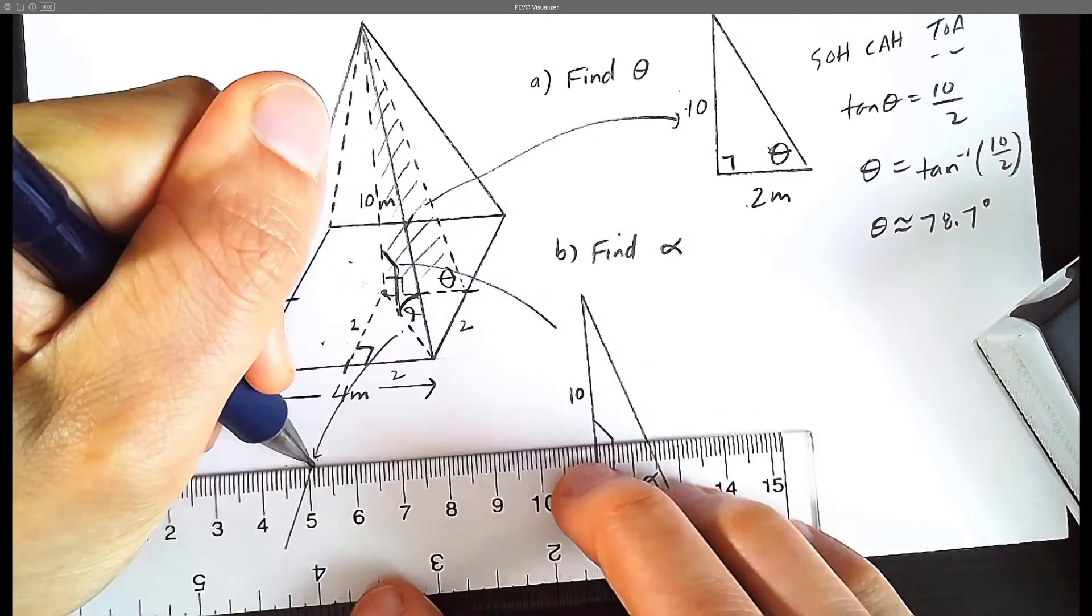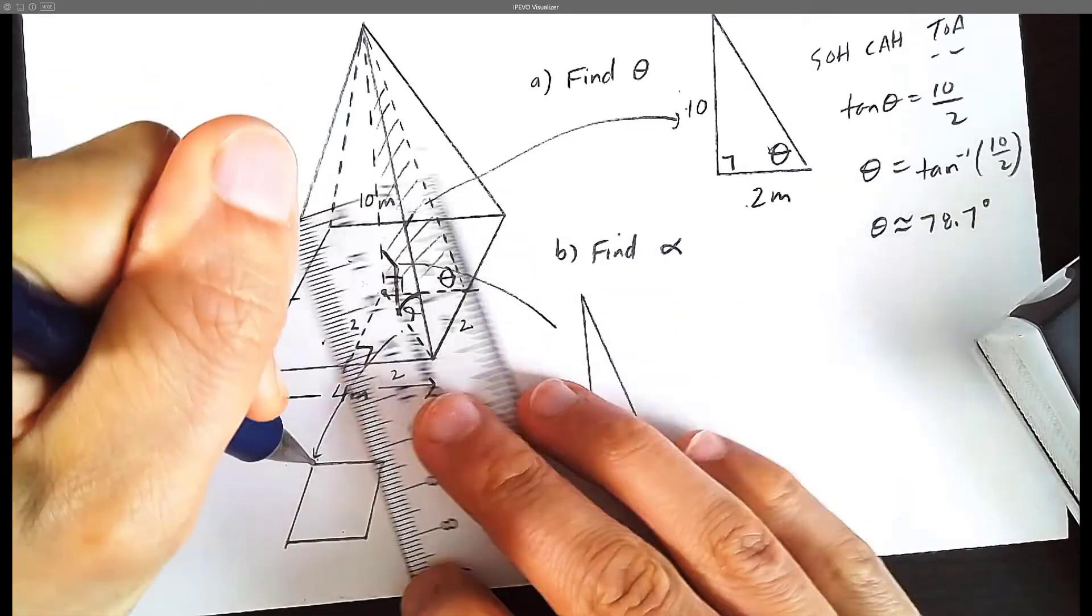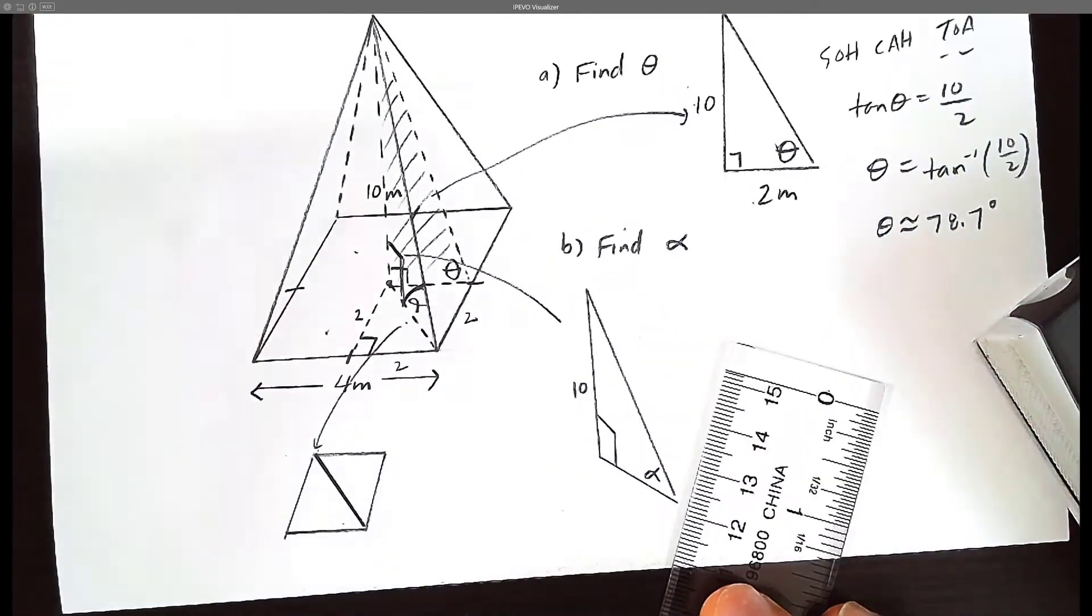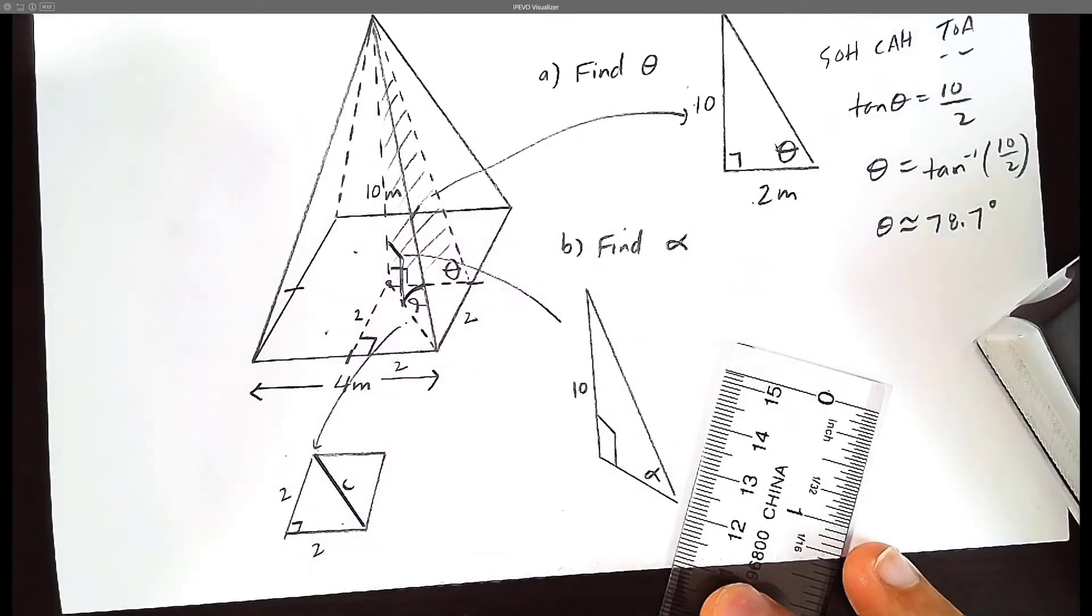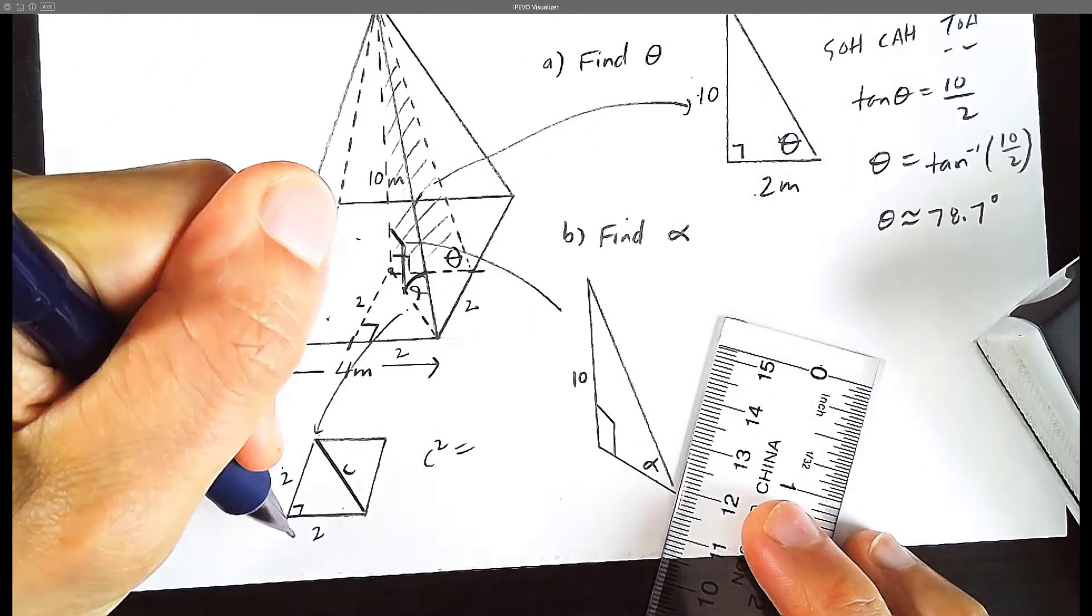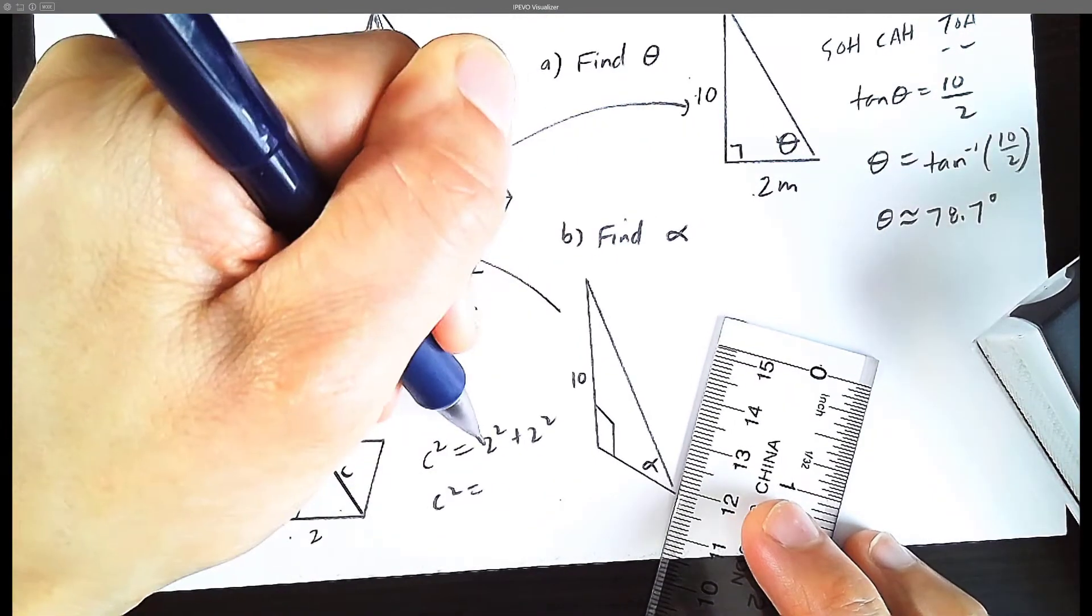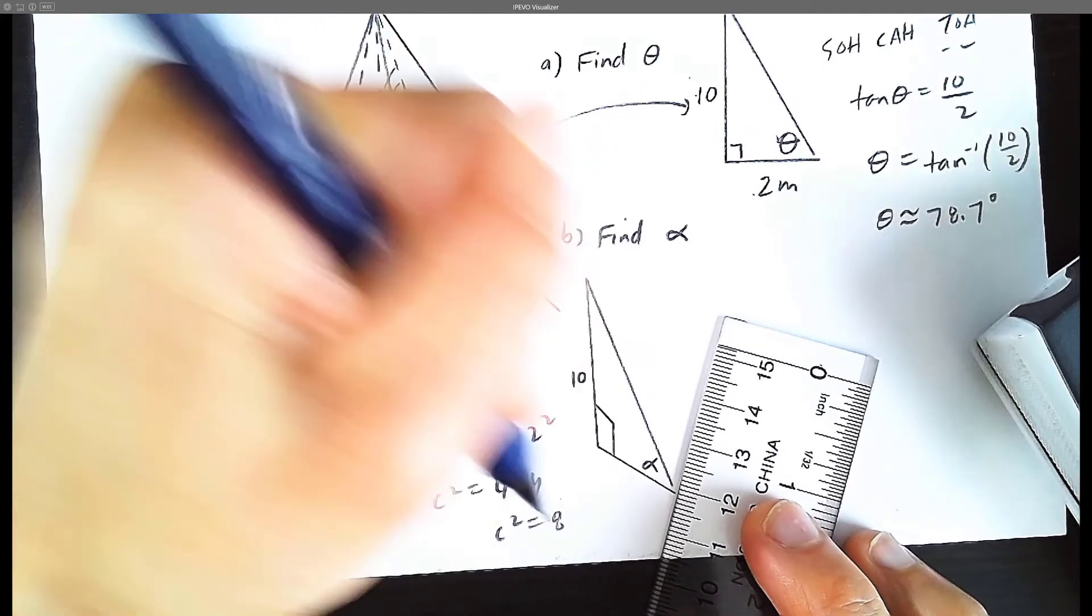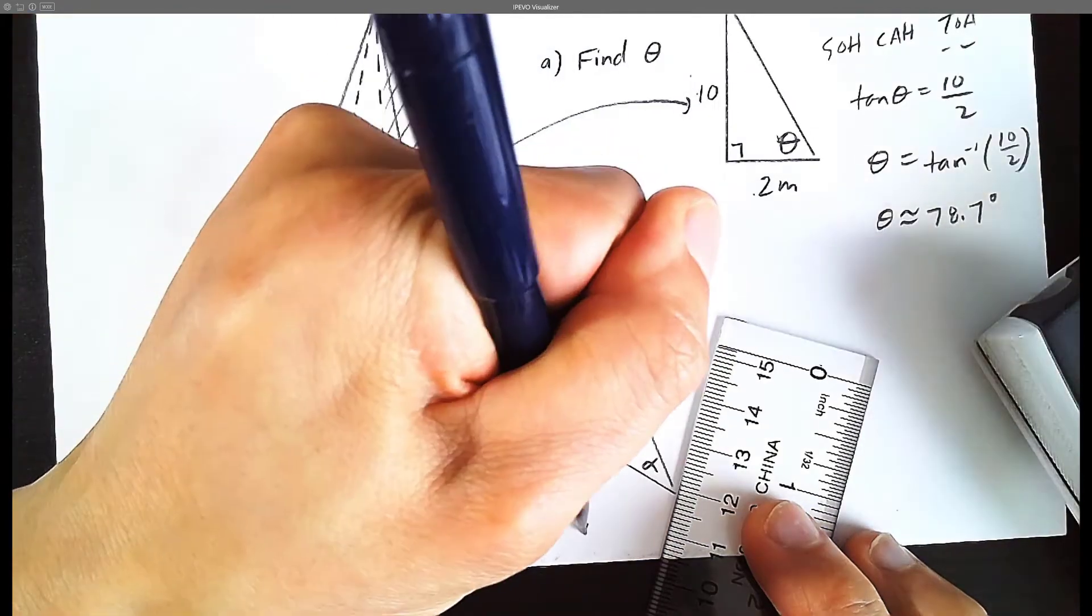So we have this nice square that happens to be 2 meters by 2 by 2. And we're trying to solve for this diagonal length here. So this is 2, this is 2. Let's solve for c. Pythagorean theorem tells us that c squared equals a squared plus b squared. In this case a and b are 2. So c squared equals 2 squared which is 4 plus 4. c squared equals 8. So therefore this actual hypotenuse is going to be the square root of 8.